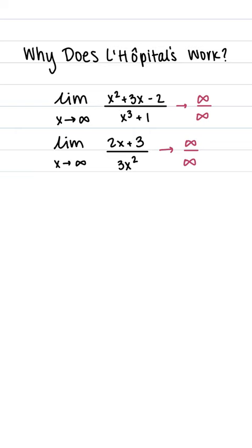So again, we want to take a look at their rates of change because perhaps one is growing quicker than the other. Here we end up with 2 divided by 6x, and when we plug in infinity, this is going to result in the denominator growing really, really big. And 2 divided by a big number goes to 0.